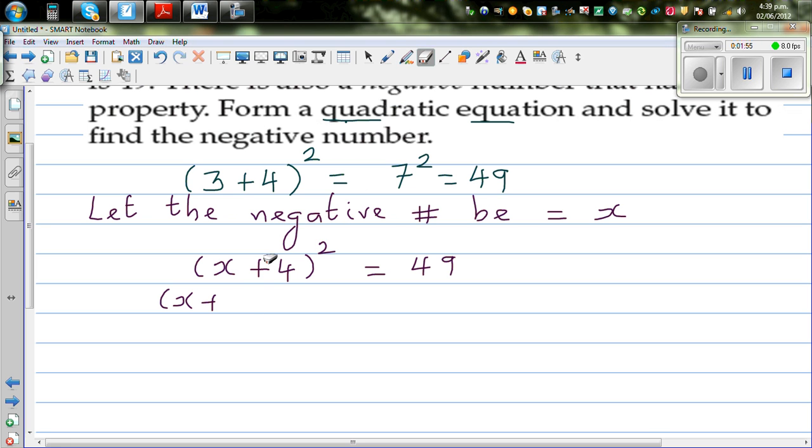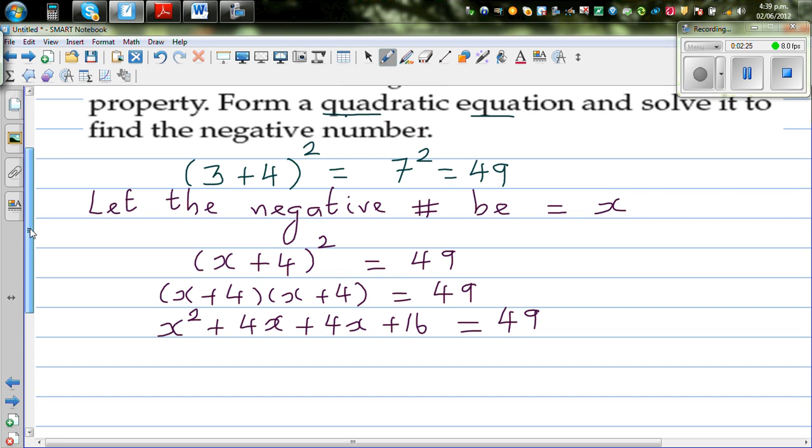So this will also be x plus 4. So this is x plus 4 times x plus 4 is equal to 49. So let's expand this using whichever method. So x times x is x squared. Then x times 4 is 4x. Then 4 times x is again 4x. And 4 times 4 is 16. You have to be very careful in this step. You should not be making a mistake in simple expansion like this.